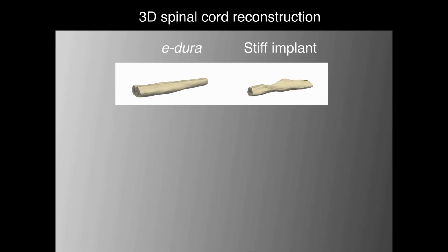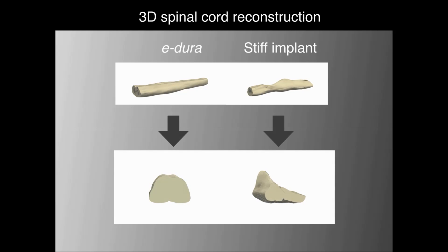After six weeks of implantation, we reconstructed the explanted spinal cord in 3D. All rats with stiff implants displayed significant compression and flattening of the spinal cord. In contrast, the spinal cord of rats with eDura were smooth and undamaged.